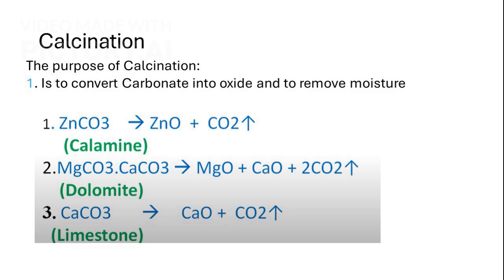The primary purpose of calcination is to convert carbonate into oxide and remove moisture. This conversion is crucial for preparing materials for further processing and ensuring their purity.